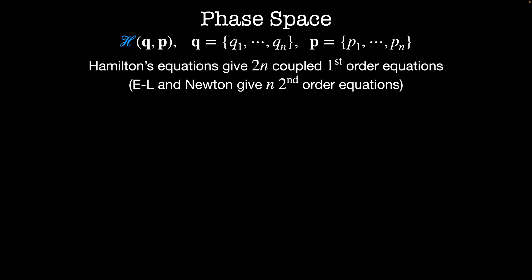Hamilton's equations evolve all of these positions and momenta forward in time, which means we need 2n coupled first order equations to fully determine the dynamics of a system described by the Hamiltonian H.